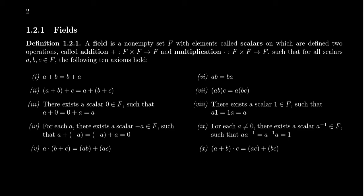It turns out that the real number system has 10 properties — 10 algebraic properties that we call axioms — which are going to be the definition of a field. These are properties that the real number system demonstrates that we want to find in other algebraic species. The first one tells us that a plus b should be the same thing as b plus a. This is commonly referred to as the commutative property of addition. We also require that multiplication be commutative: a times b is equal to b times a.